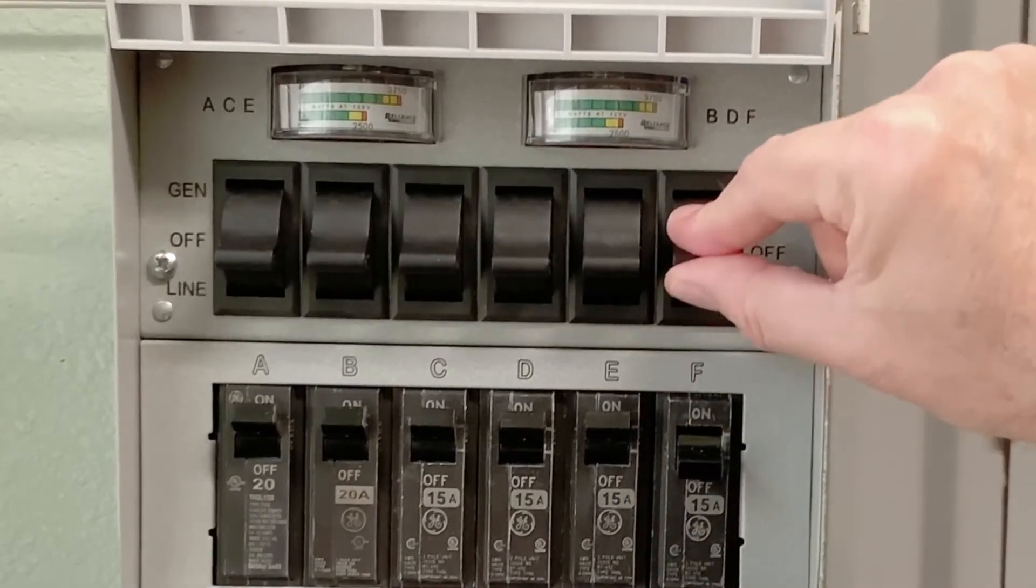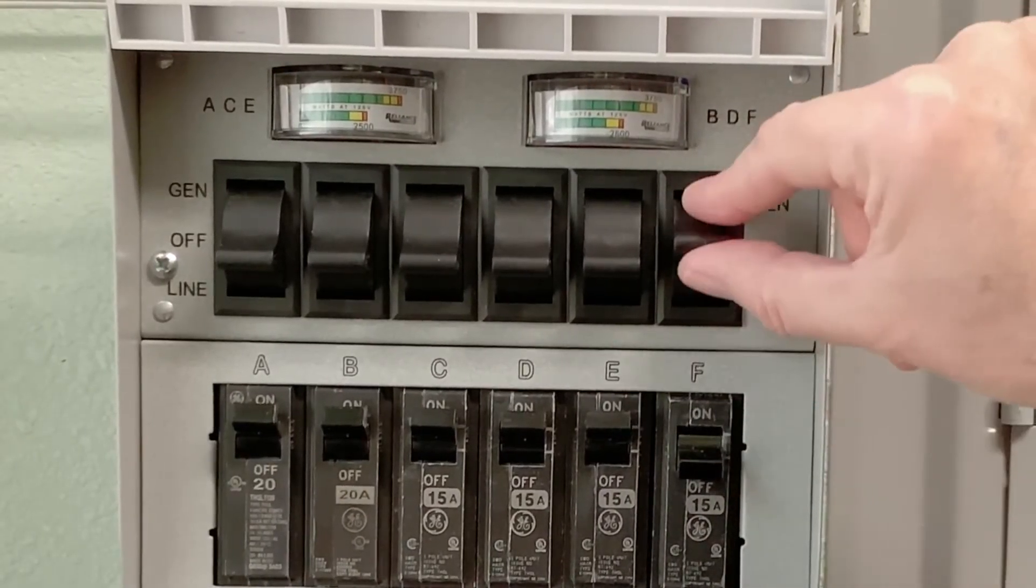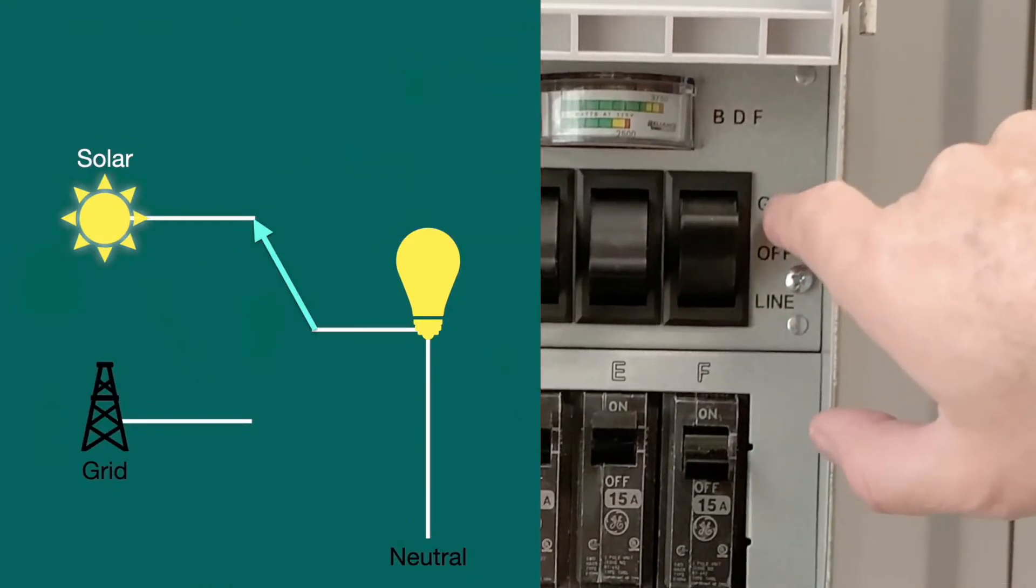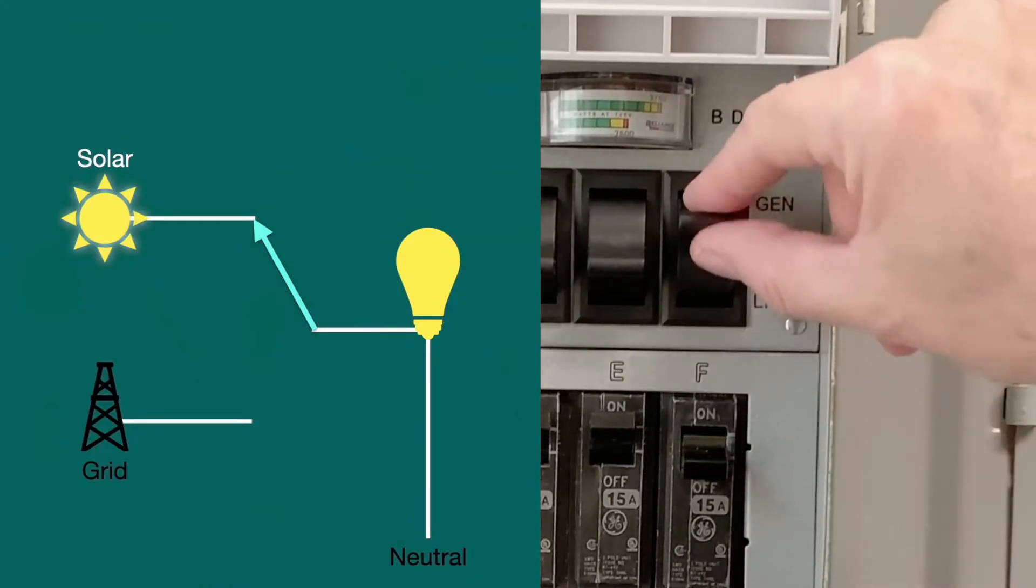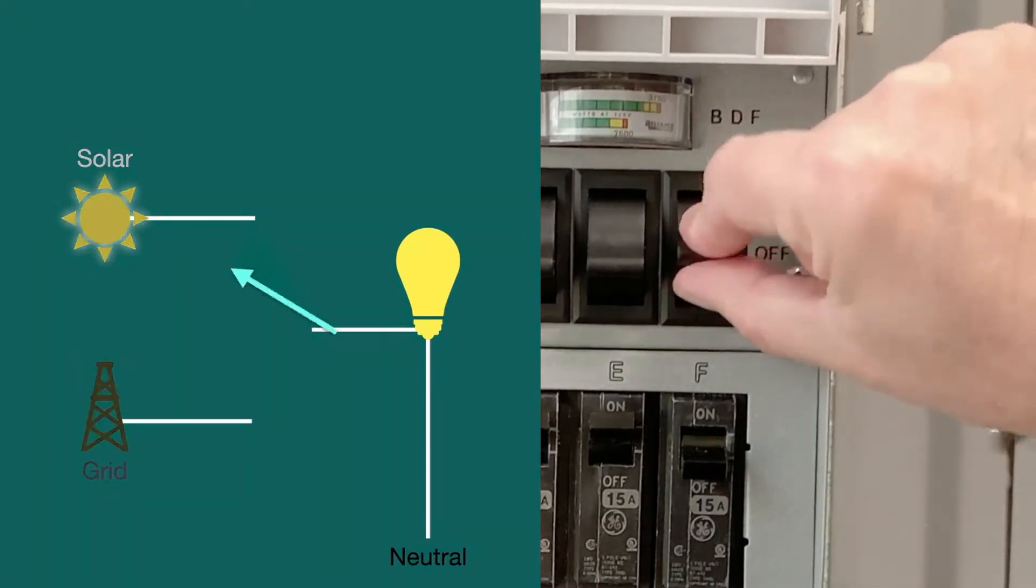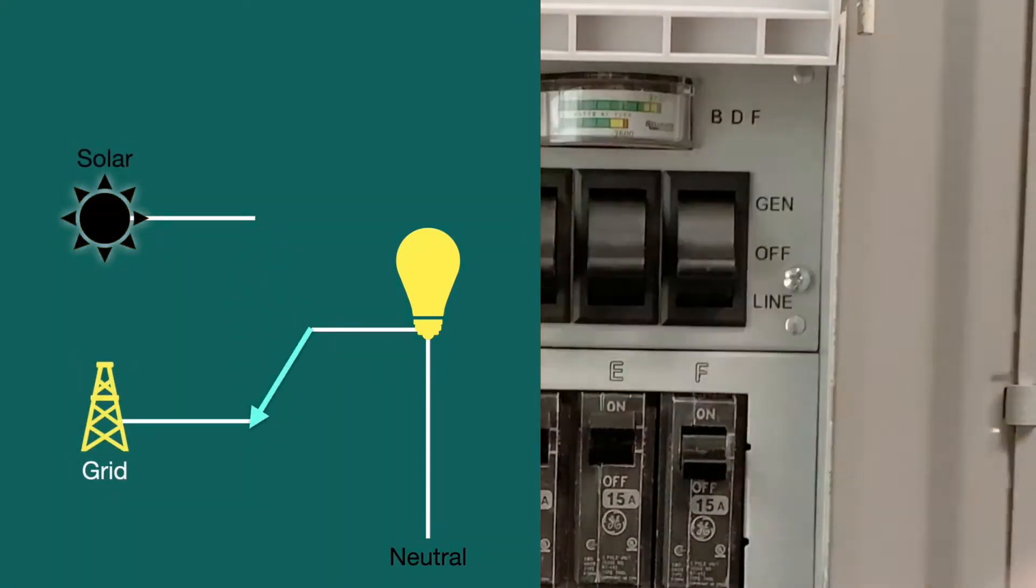Now, each of these rocker switches is a three-position switch that lets you pick between solar, or called generator here but we use it for solar, a middle off position, and then if you switch it down, you're on the grid or line.